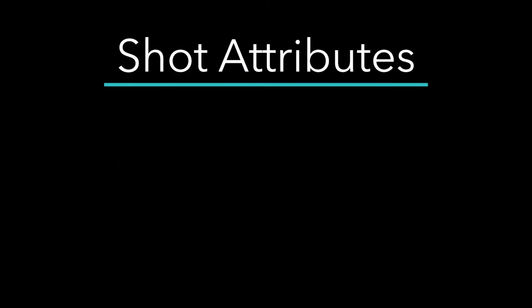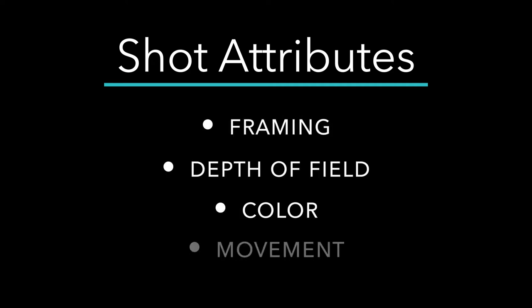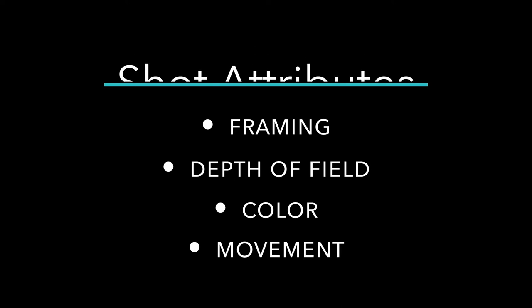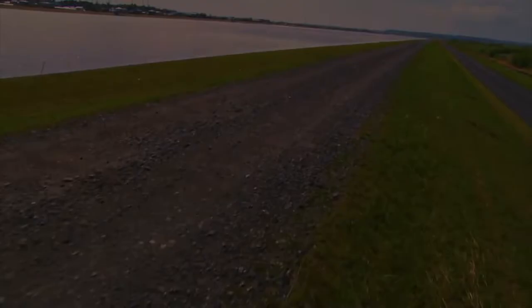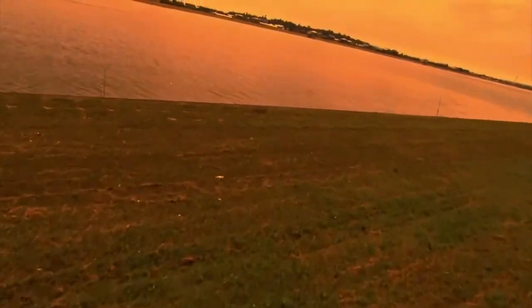Generally speaking, every shot in a film contains four attributes: framing, depth of field, color, and movement. These are umbrella categories, each with their own subset of techniques that are tied to norms of associated, culturally informed meaning-making. The camera itself is an active player that helps create ideas and stories, just like the narrative and the mise-en-scene.